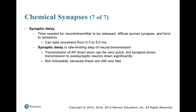There is a synaptic delay — this is the rate-limiting step. The time needed for a neurotransmitter to be released, diffuse across the cleft, and bind to its receptor takes anywhere from 0.3 to 5 milliseconds. The action potential itself travels very quickly, but the synapse significantly slows transmission to the postsynaptic neuron, even though we don't notice it in real life.